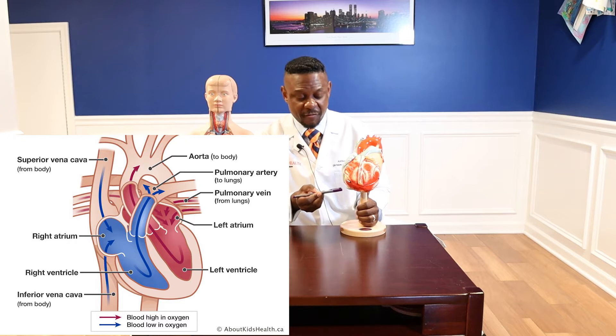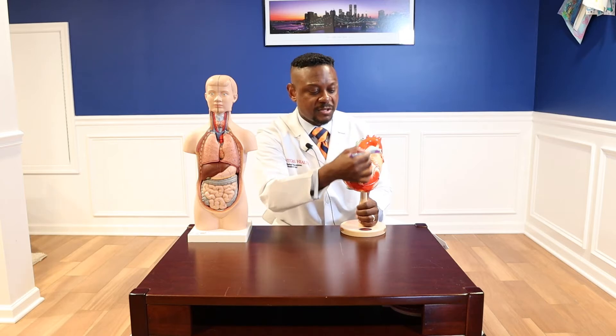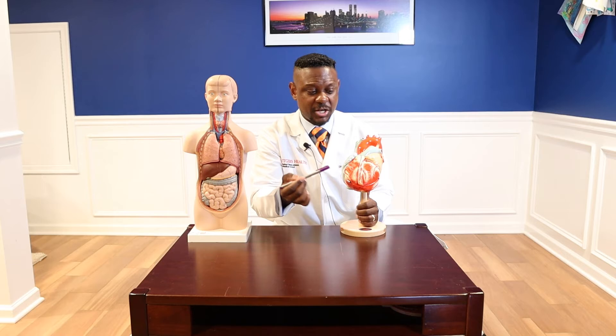We also have blood coming from the inferior vena cava into the right atrium, to the right ventricle. This is the left side of the heart — left atrium, left ventricle — and blood will essentially go from the left atrium to the left ventricle.